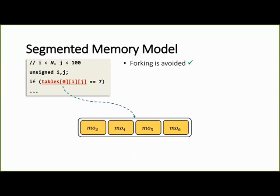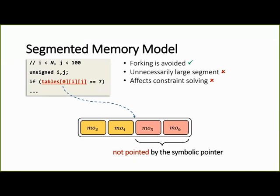So back to our example, this symbolic pointer now will point only to one object, our segment. So we indeed can avoid the forks, but as you can see this segment contains two redundant objects, which are not pointed by our symbolic pointer, MO5 and MO6.